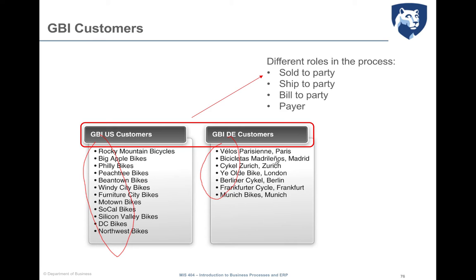The sold-to-party is the customer who submits the order — this is the primary type of business partner. The order may indicate that the material should be shipped to a different location, or that the invoice should be sent to someone else. The ship-to-party is where the materials need to be delivered, and the bill-to-party is the entity from which the invoice will arrive — the one who will send the invoice.